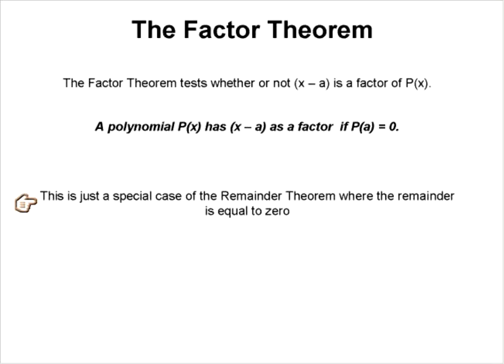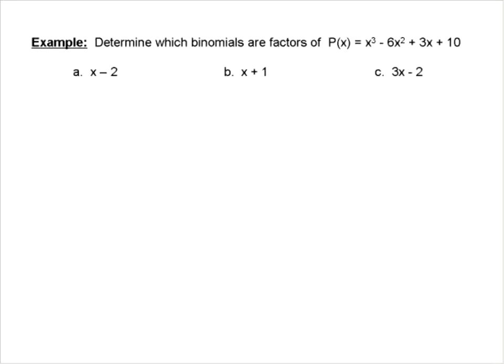So let's look at this in a couple of examples. We want to determine whether each of the following binomials are factors of this polynomial. Remember, according to the factor theorem, if it is a factor, then when you plug the A value into the polynomial, we're going to get a remainder of zero. If it's a remainder of anything but zero, it is not a factor.